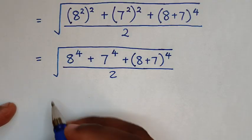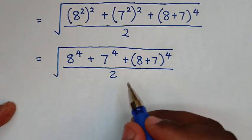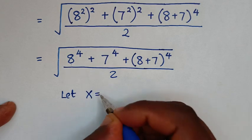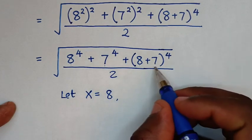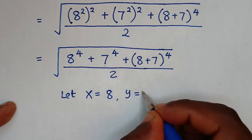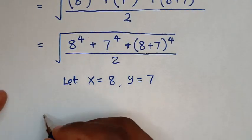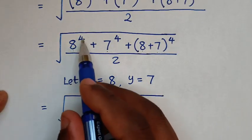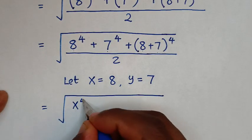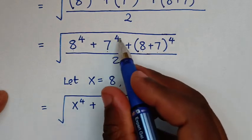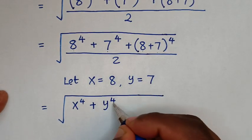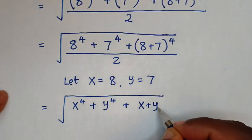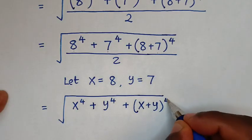Now from here, 8 is common. So we let x equal to 8, and y equal to 7. Then our expression will be the square root of x to the power of 4, plus y to the power of 4, plus (x plus y) bracket to the power of 4.